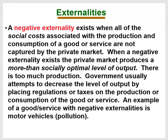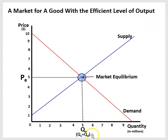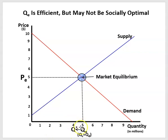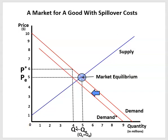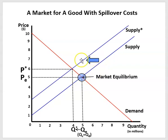A negative externality, on the other hand, exists when all of the social costs associated with the production and consumption of a good or service are not captured by the private market. When a negative externality exists, the private market produces a more than socially optimal level of output — there is too much production and consumption. Graphically, competitive markets produce the efficient level of output Q subscript E, where quantity demanded meets quantity supplied. However, from society's perspective, a lower level of output, Q superscript star, is preferable. This can be achieved by decreasing demand or alternatively by decreasing supply.